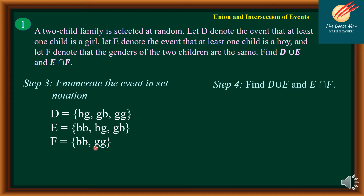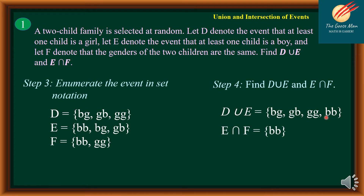We want to find the union of D and E. For D union E, we combine the elements of D and E: BG, GB, and GG — along with BB — giving us all four outcomes. On the other hand, to get the intersection of events E and F, the common element is only BB, so E intersection F is equal to {BB}.